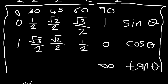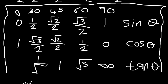For tan 60: sine 60 over cos 60 is root three over two divided by one over two, which gives root three. For tan 45: dividing the corresponding values gives one. For tan 30: one-half divided by root three over two gives one over root three. And for tan 0: zero over one gives zero.